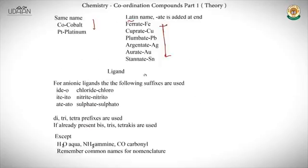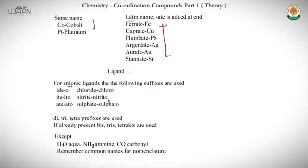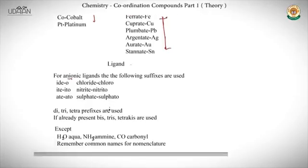Next, we'll look at how to name ligands. Check whether your ligand is anionic, cationic, or neutral. For anionic ligands: change -ide to -o, -ite to -ito, and -ate to -ato. For example, chloride becomes chloro, nitrite becomes nitrito, and sulfate becomes sulfato.